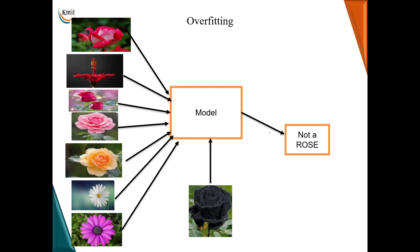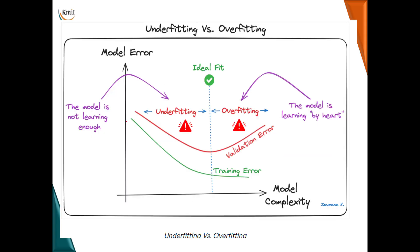When an unseen image is provided that deviates from the training data, the model will not be able to classify it as a rose and outputs 'not a rose.' This happens because the model was unable to generalize — it learned all the features so well from the training set that it cannot classify data slightly deviated from the training data. This is called overfitting.